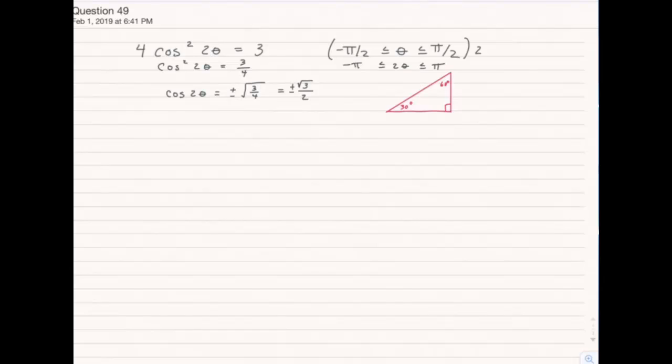I have my 30, 60, 90 triangle. I remember that the side of length 1 is opposite 30 degrees, square root of 3 is opposite 60, and 2 is the hypotenuse.